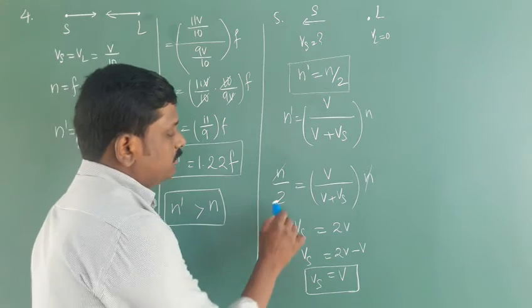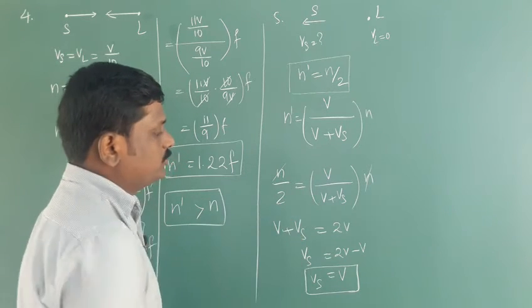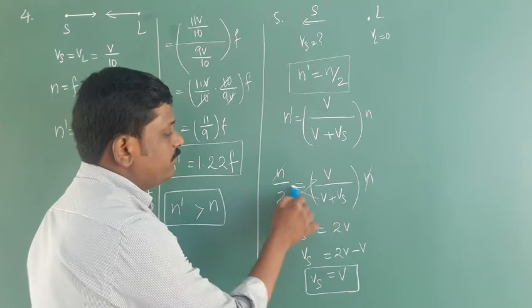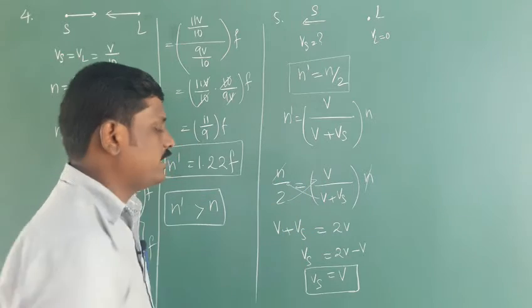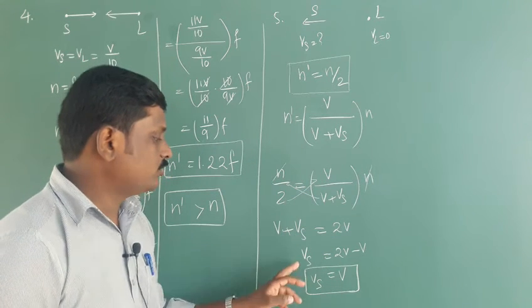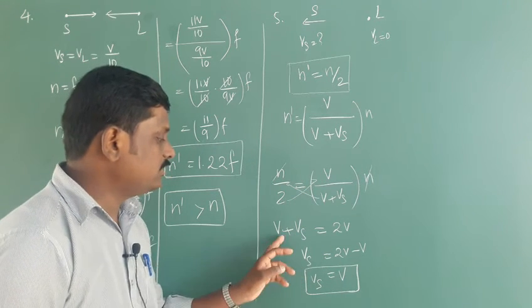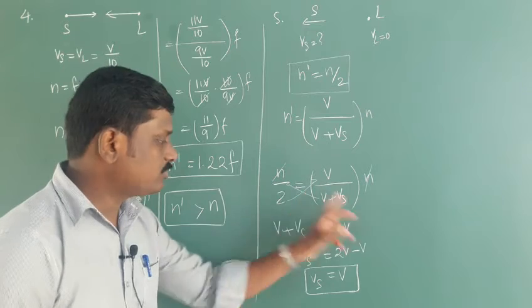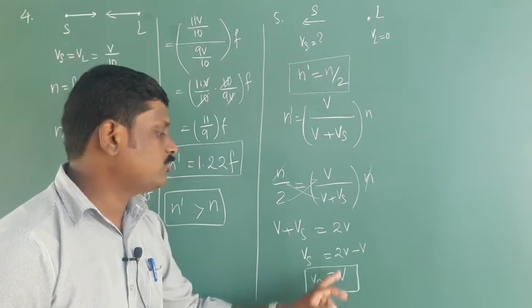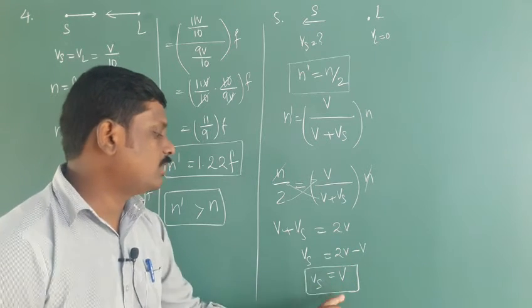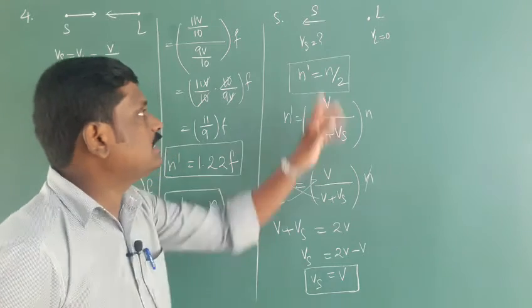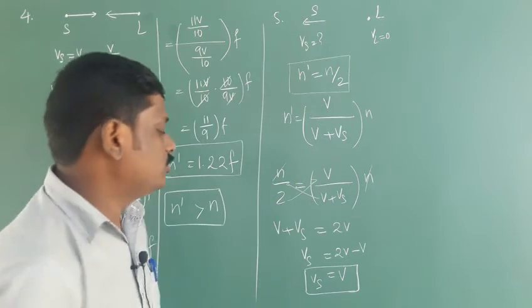So we have 1 by 2 equals V by V plus Vs. Cross-multiplying: V plus Vs equals 2V, so Vs equals 2V minus V, which gives Vs equal to V. Therefore, the velocity of the source equals the velocity of sound. At 330 meters per second, when the source moves away from the stationary listener, the frequency heard by the listener is half the frequency created by the source.